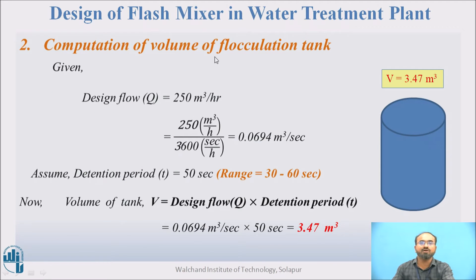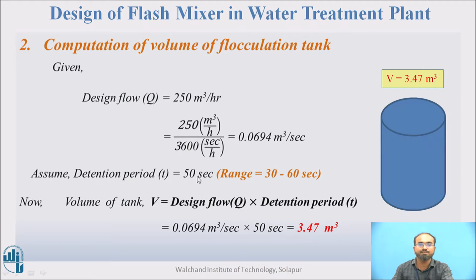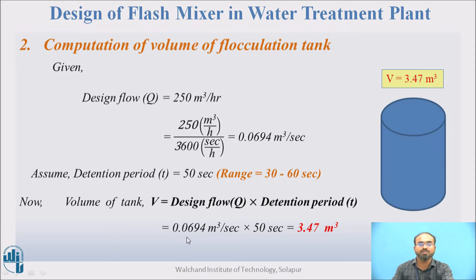For computation of volume of the flash mixer: the design flow Q is 250 meter cube per hour, which we convert to 0.0694 meter cube per second by dividing by 3600. The detention period is kept between 30 to 60 seconds; here we take 50 seconds. Volume V equals Q multiplied by T, so V equals 0.0694 multiplied by 50, giving a volume of approximately 3.47 meter cube.